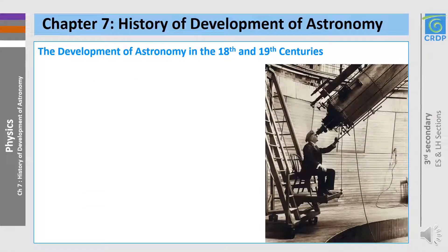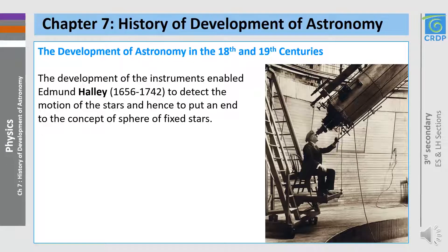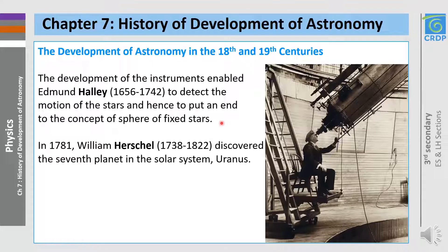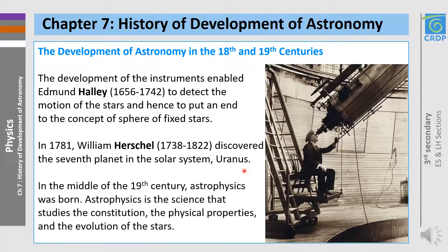Now for the development of astronomy in the 18th and 19th centuries. Edmund Halley detected the motion of the stars and hence put an end to the concept of the sphere of fixed stars. Then in 1781, William Herschel discovered the seventh planet in the solar system, Uranus. And in the middle of the 19th century, astrophysics was born. Astrophysics is the science that studies the constitution, the physical properties, and the evolution of the stars.